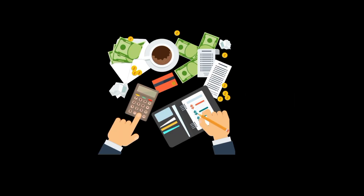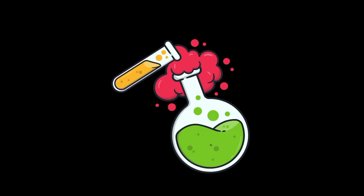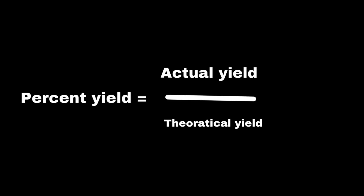One last key thing is to have knowledge of percent yield. Percent yield is a measure of how efficient a chemical reaction is, comparing the actual amount of product you get in the lab to the amount you theoretically should have produced based on stoichiometric calculations. In an ideal world, reactions would always go perfectly and you'd get 100% of the product, but in real life, some product may be lost, reactions may not go to completion, or side reactions can happen. To calculate percent yield, we use the formula: percent yield = (actual yield ÷ theoretical yield) × 100.